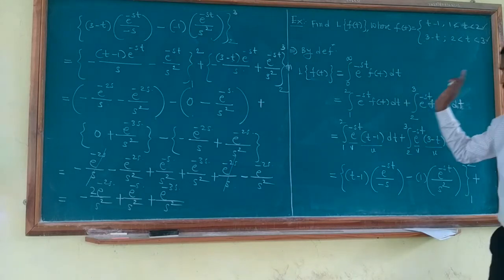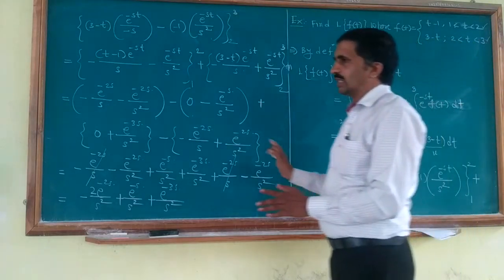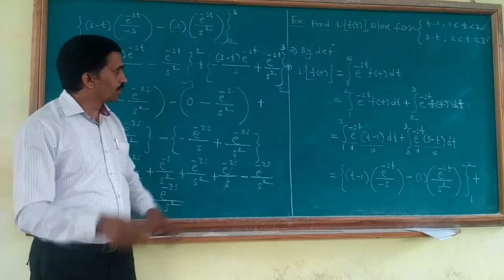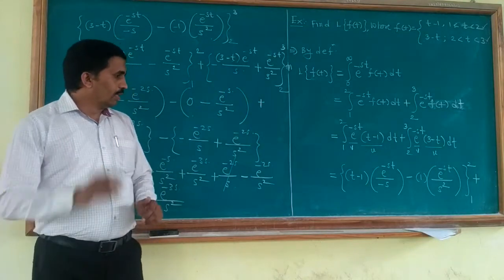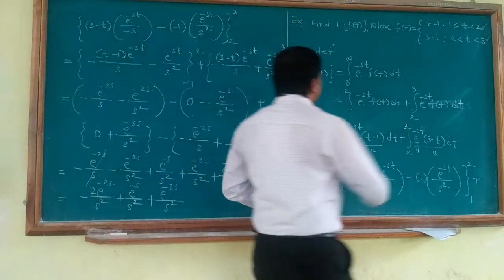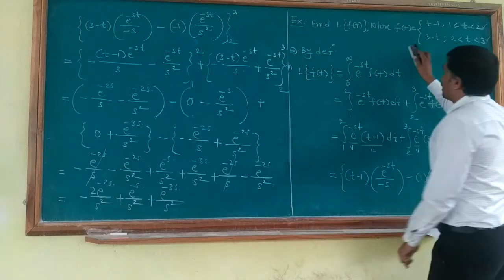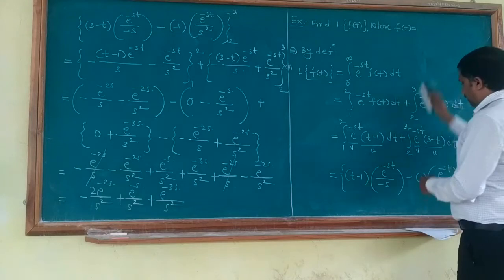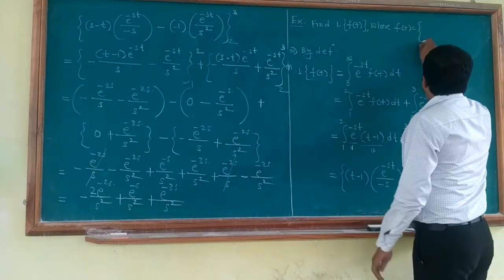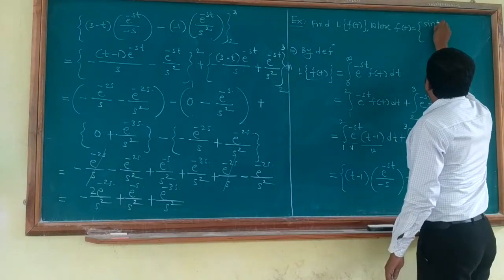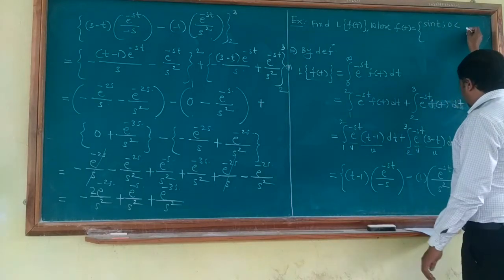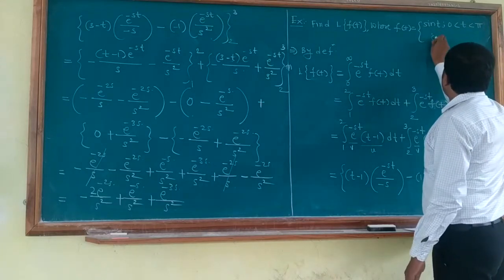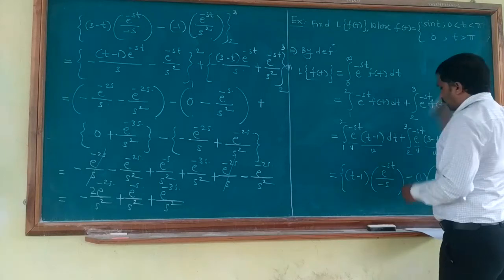Now let us consider one more example. Find the Laplace transformation of f of t, where f of t equals sin t for 0 ≤ t ≤ π, and f of t equals 0 if t is greater than π.